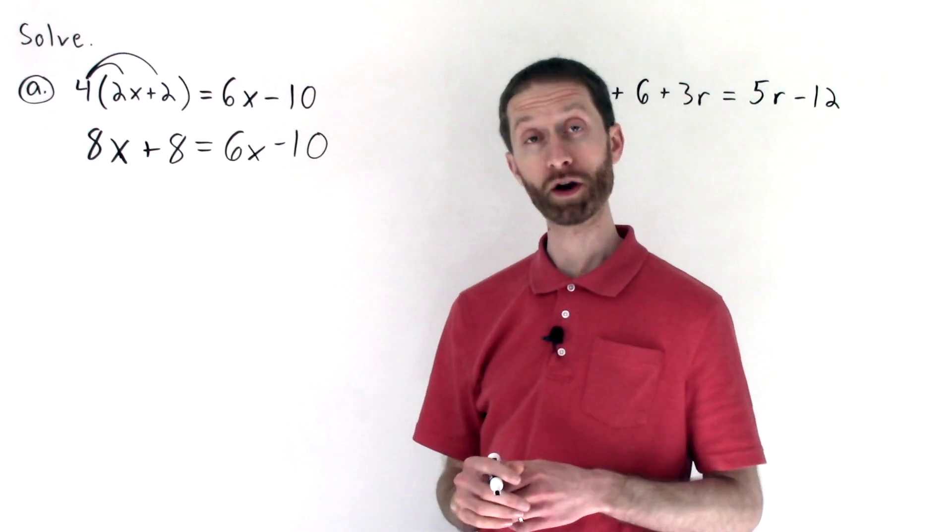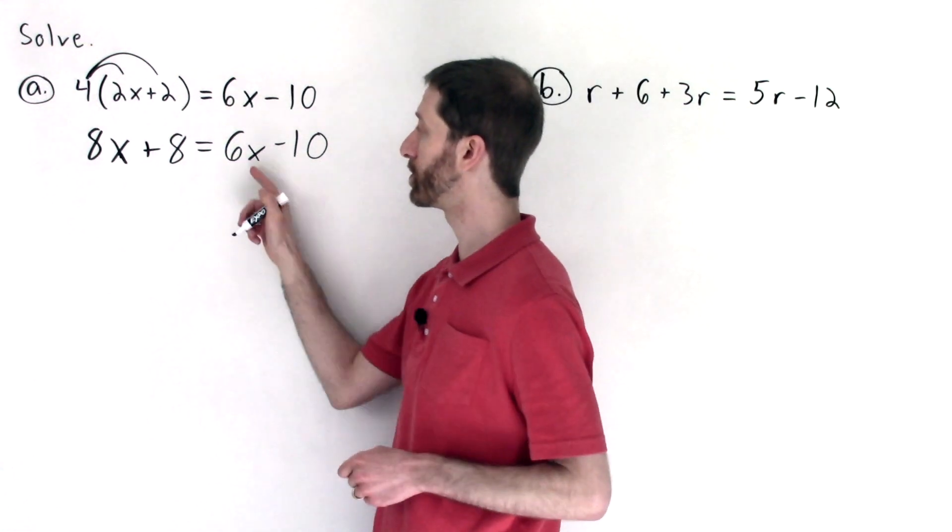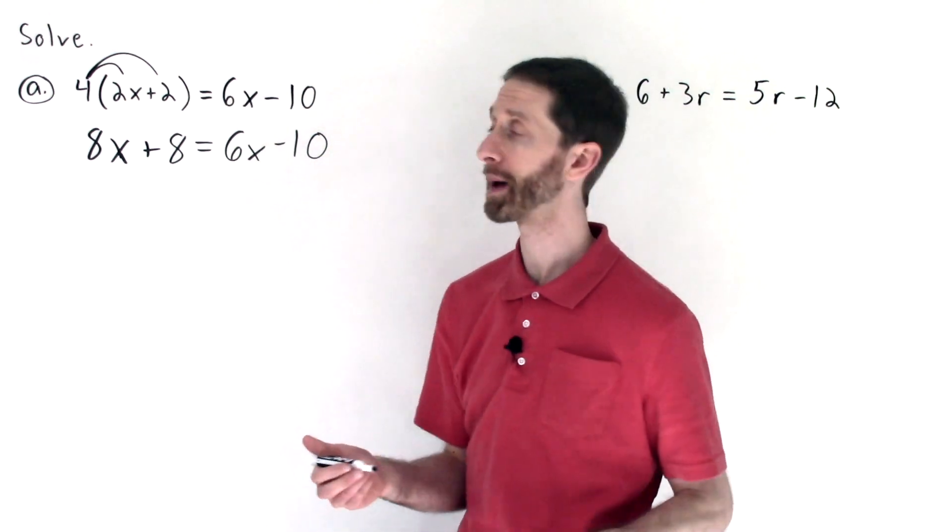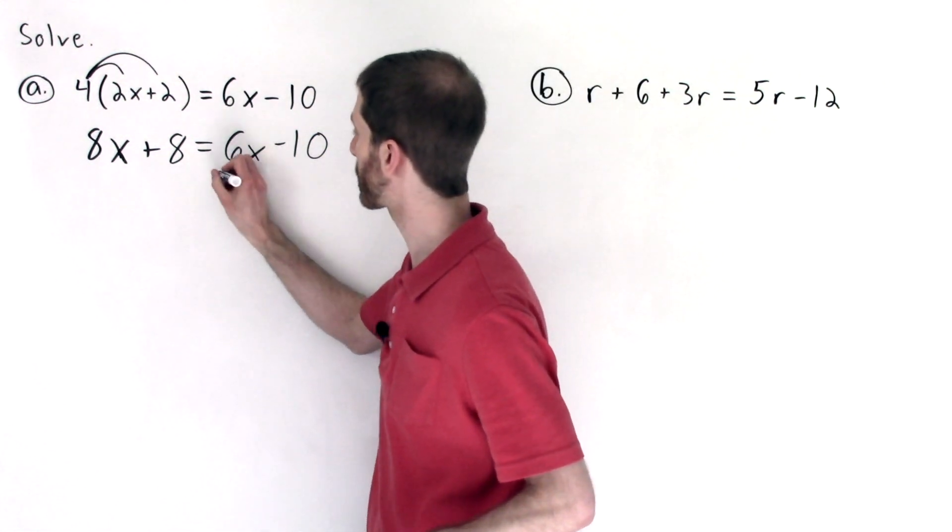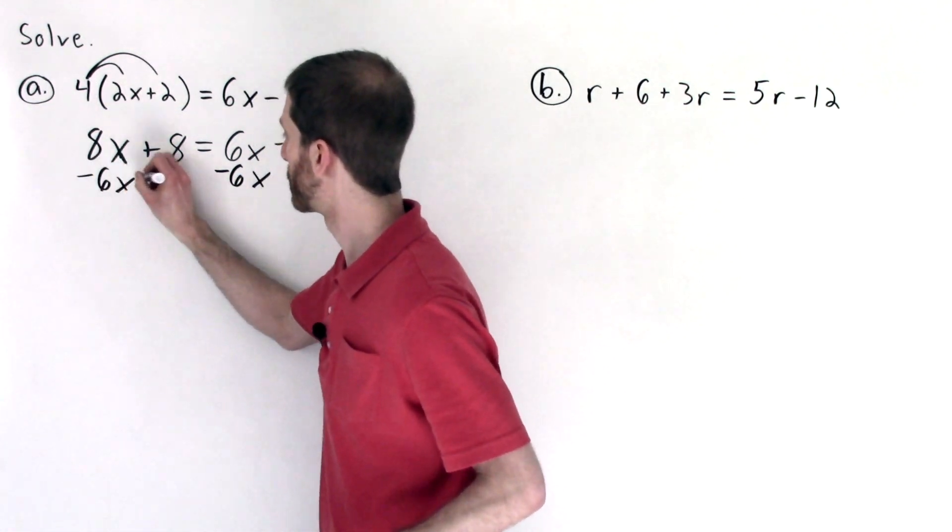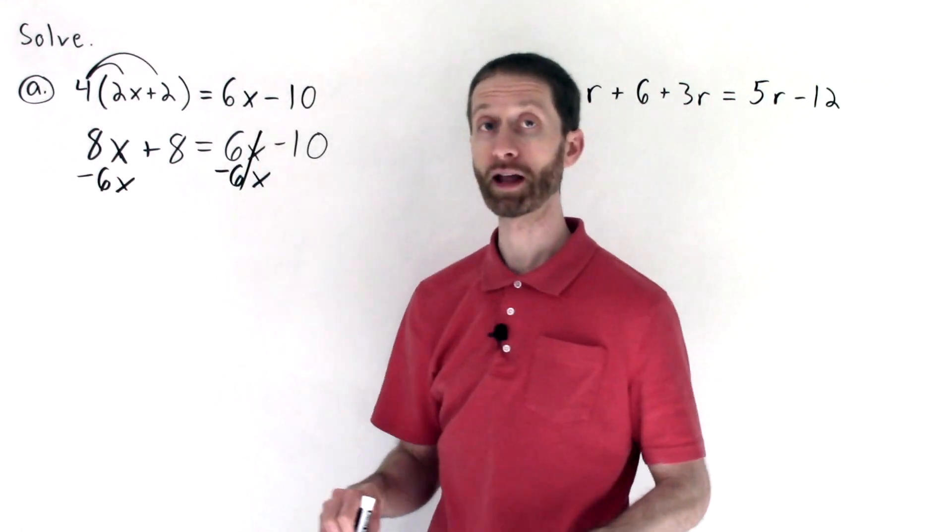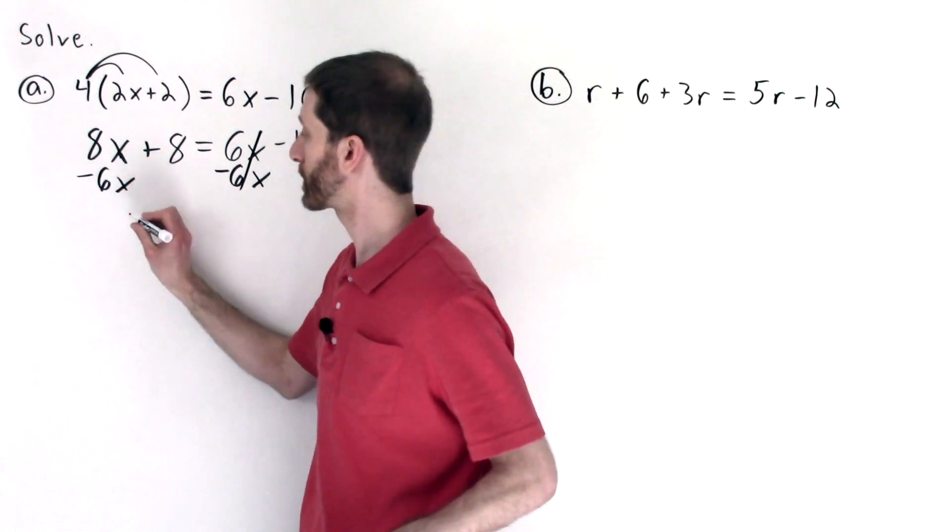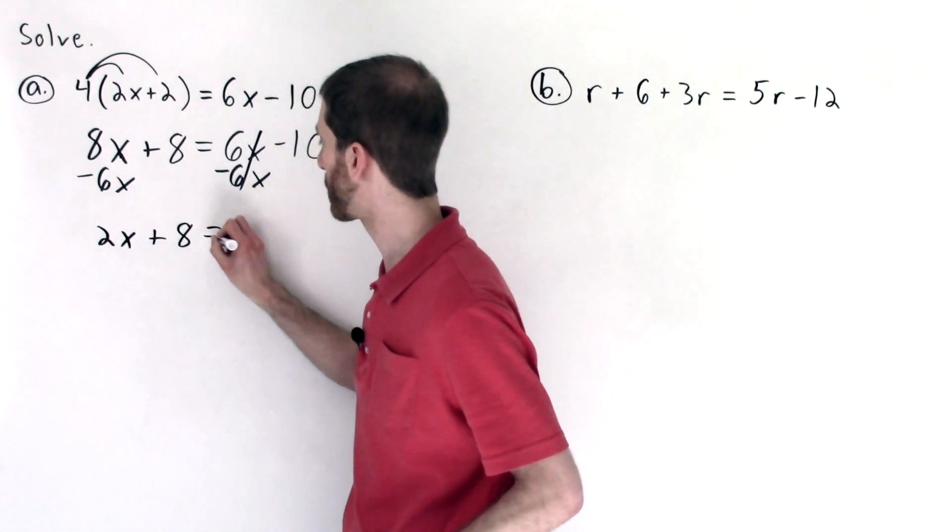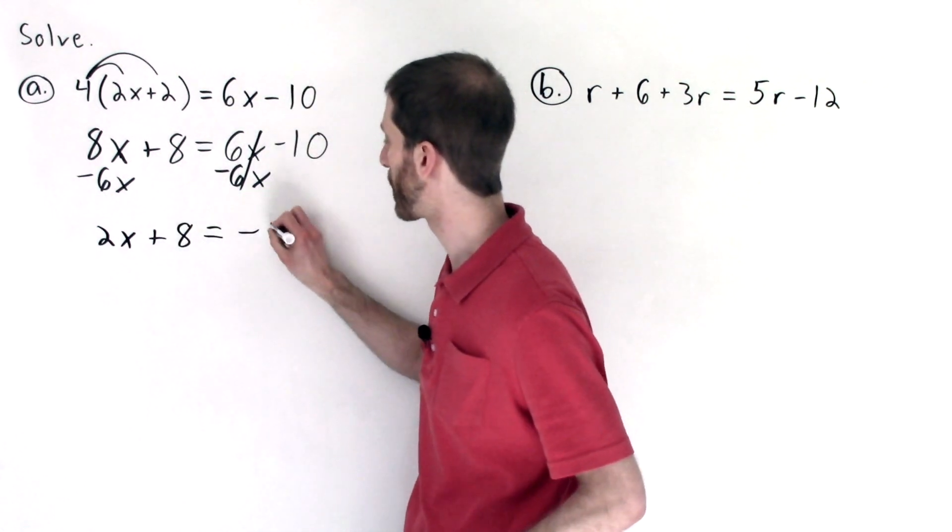Then what we want to do is we want to join up the variables. I choose to move the 6x to the left hand side to keep the variable coefficients positive. To undo positive 6x, I subtract 6x from both sides of the equation. That cancels out the 6x on the right hand side. We simplify. 8x minus 6x is 2x. Plus 8, just copying everything else, equals the negative 10 that we have remaining.